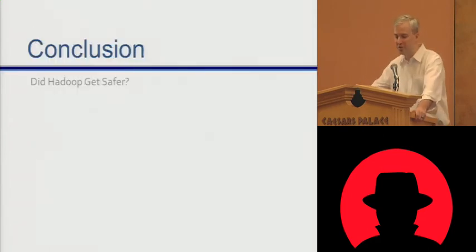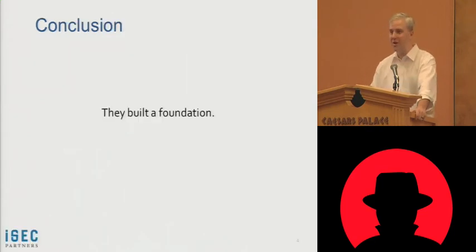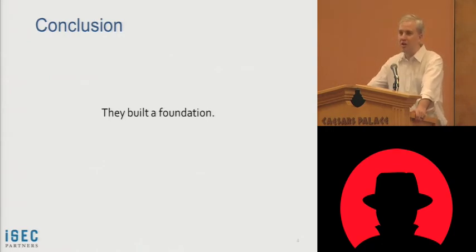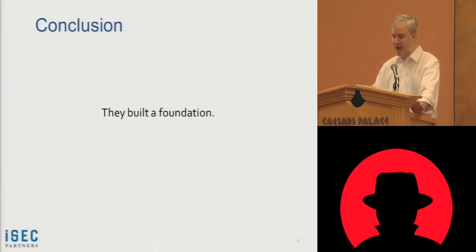Let's start with a conclusion. Did Hadoop get any safer? What I'd say is they built a foundation. Originally, the only way to safely deploy Hadoop was with extreme and strict network segregation. And so now, the only way to deploy Hadoop securely is with extreme and strict network segmentation. But they're on the right track — they've built a foundation and there's a lot of material to work with. Some of the gaps are in the design, some in the implementation, and some in the documentation, but it's headed in the right direction.